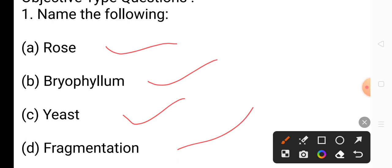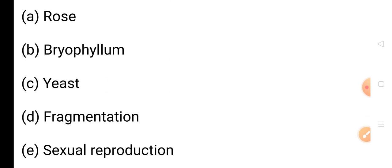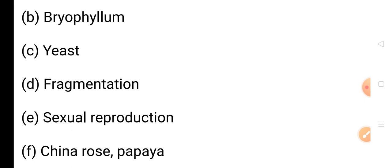We have solved A, B, C, and D. Now Question E: The type of reproduction which involves fusion of gametes — the answer is sexual reproduction. Question F: Plants which are produced from seeds — examples include papaya, cucumber, and so on.